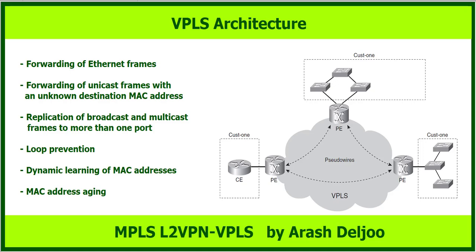As with an Ethernet switch, the PE routers of the VPLS network should perform MAC address learning and aging. This means the PE routers will notice the source address of received frames and associate them with the physical port or pseudo-wire. For example, if a PE router receives a frame with a source MAC address on a physical interface, it will learn that MAC on that interface. Similarly, if the PE receives a frame from a pseudo-wire, it will learn the pseudo-wire as the logical interface for that MAC address.